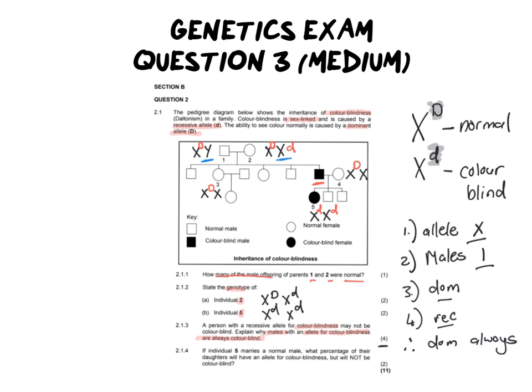Let's move into the next question. It says if individual five marries a normal male what percentage of their daughters will have an allele for colorblindness but will not be colorblind? So we've got some key pieces of information here. Number one she is having a child with a normal male which means that his sex chromosomes will have a capital letter D on the X with a Y and the next thing is we need to calculate percentage of the female children of the offspring that will carry colorblindness but will not necessarily be colorblind.